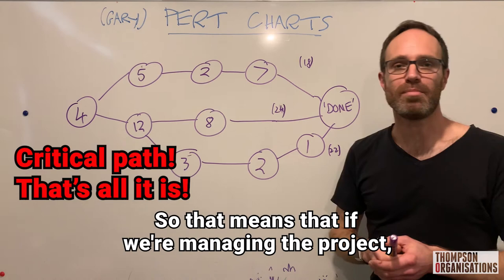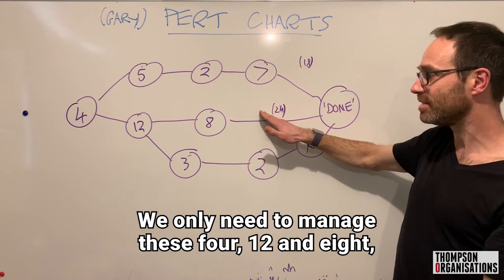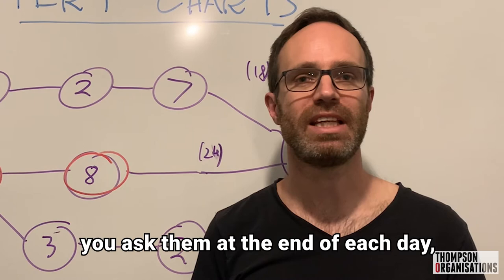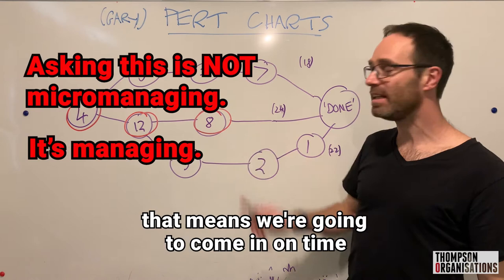So that means that if we're managing the project, we don't need to manage all the tasks. We only need to manage these 4, 12 and 8, which means the people who are assigned those tasks are accountable for them. You ask them at the end of each day, how many more days is that going to take you to get it done? And when you do the math, if it still means we're in there, that means we're going to come in on time and you can adjust accordingly. You can set a buffer at the far end of the project if you need to.